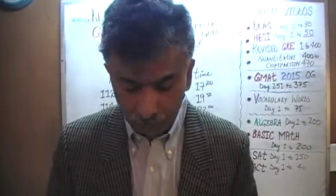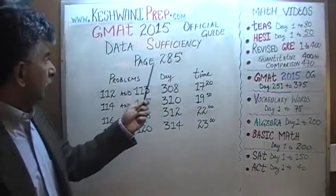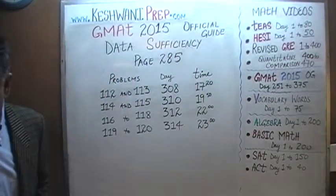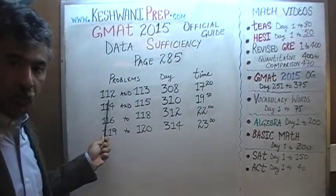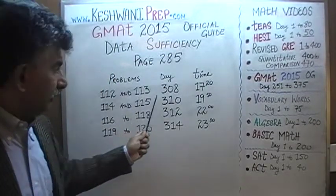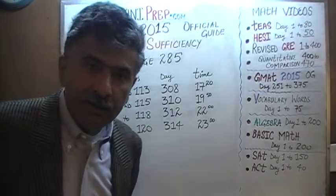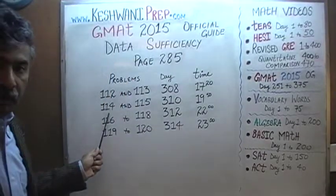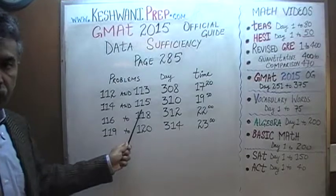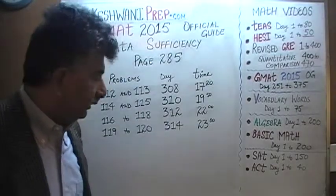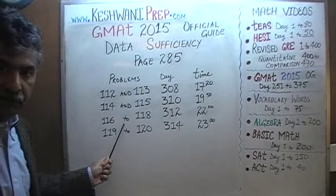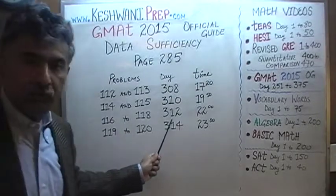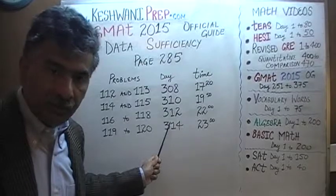Right now, we will look at all the data sufficiency problems appearing on page number 285. On page 285, you will find the solutions to problem number 112 and 113 on day number 308. Problem number 114 and 115 were solved on day number 310. You will find the solutions to problem number 116, 117, and 118 on day number 312.